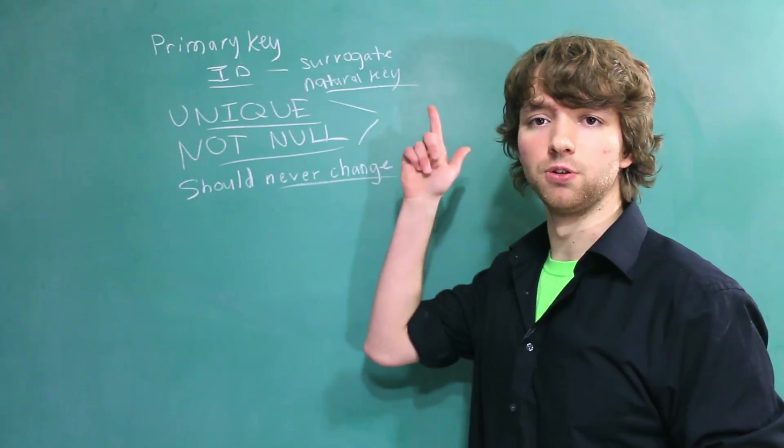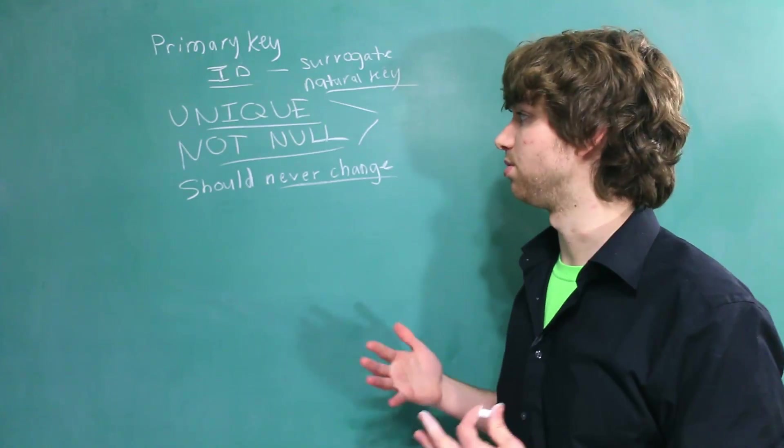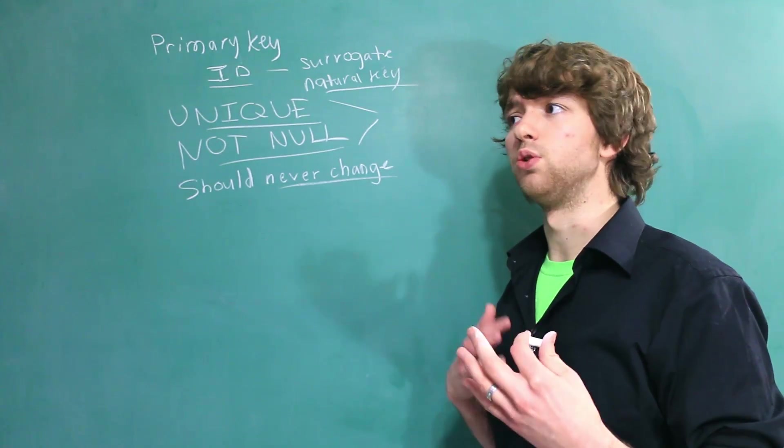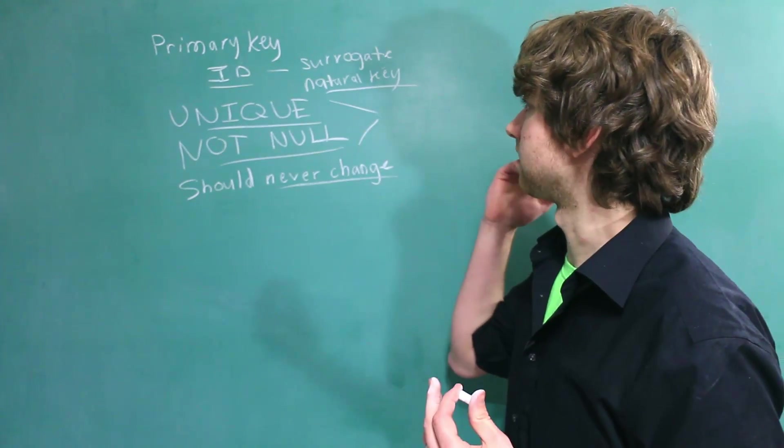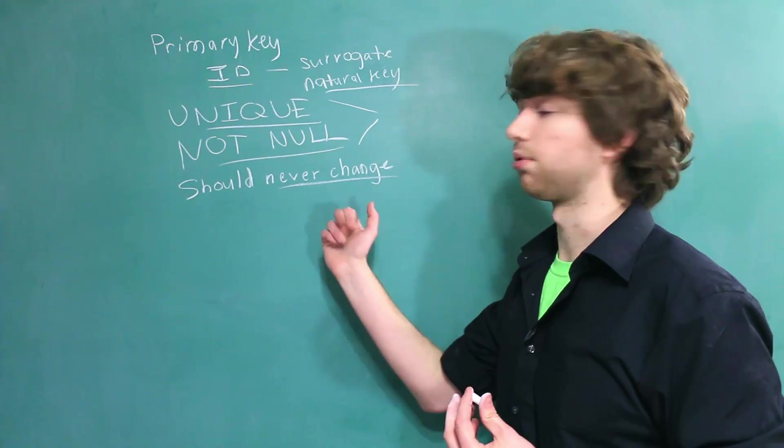A username could be a natural key and that might be a good one to use because the chances are you could restrict users from changing their username and they'll be fine with that. That would work as a natural key and it probably will never change.